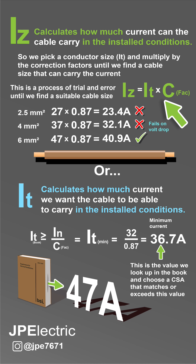This is a process of trial and error. It turns out that 6mm² cable with a current carrying capacity from the book of 47 amps is suitable. The current carrying capacity as installed in these conditions for this 47 amp cable will be 40.9 amps. It can be quite involved calculating your current this way because it is trial and error.